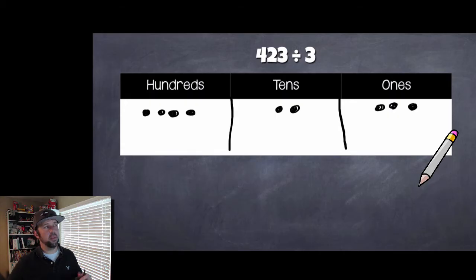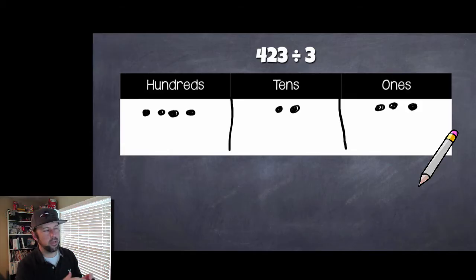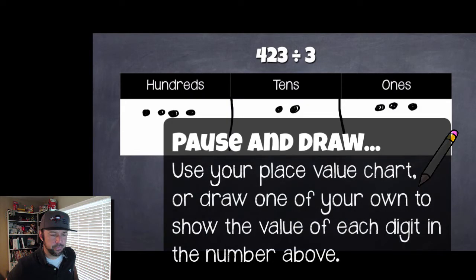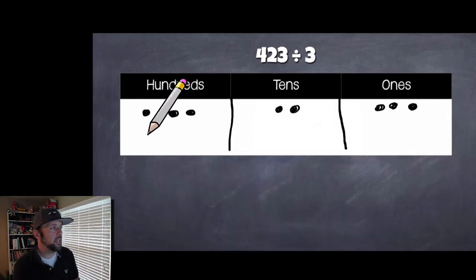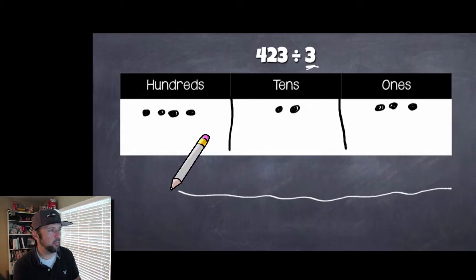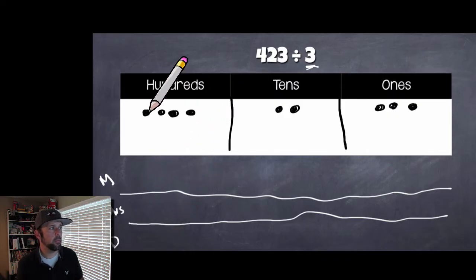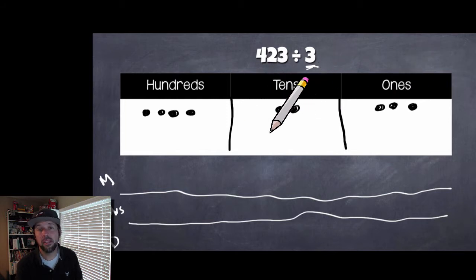Go ahead and sketch a place value chart if you haven't already — hundreds, tens, ones — and put in your hundreds, tens, and ones using place value disks if you have them, or just draw dots like me. We're dividing among three of us, so we're going to end up with three groups: Mr. Walker, Mrs. Walker, and my daughter. I'm going to take each dot from the place value chart and move them down into each group.